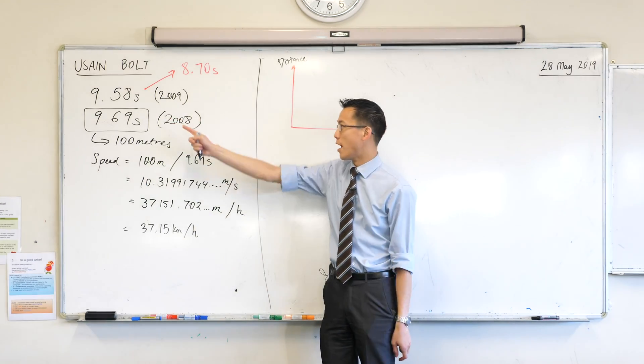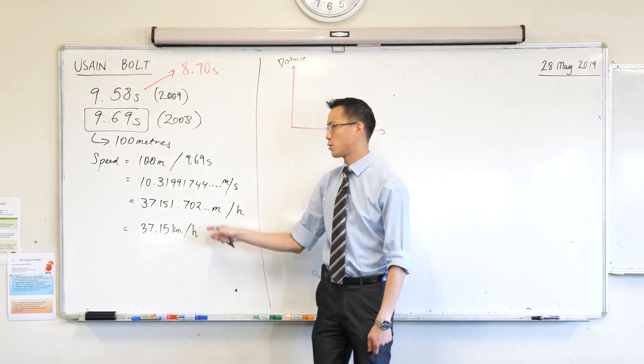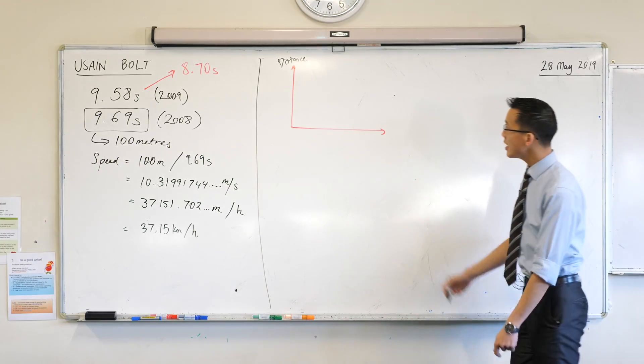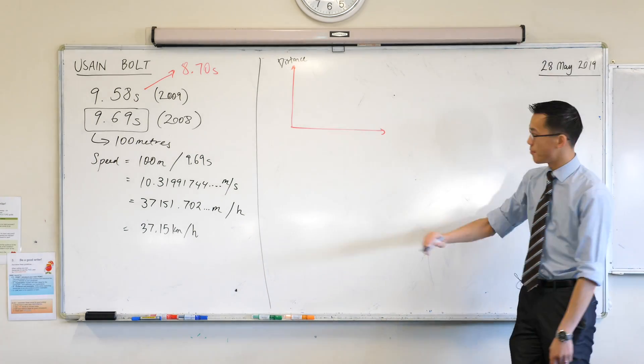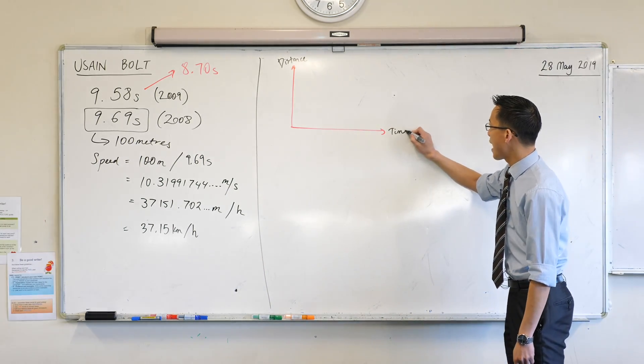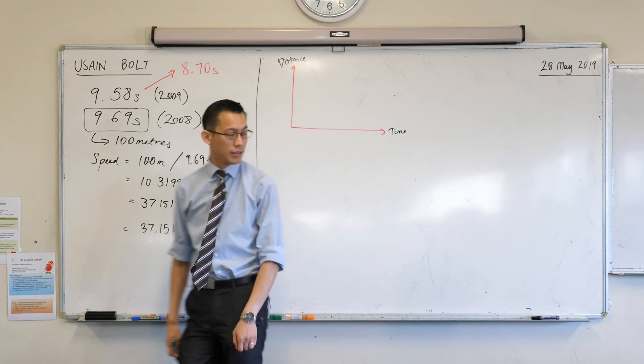But I've now switched it around the other way, okay? So I've got a distance axis going up, and I've got a time axis going horizontally.